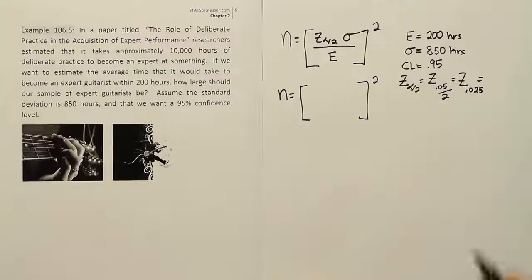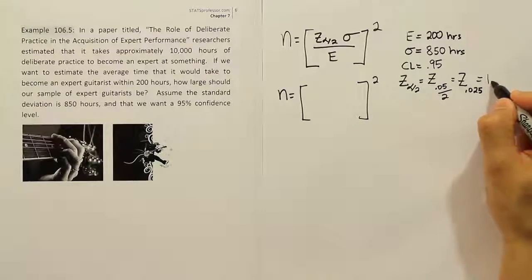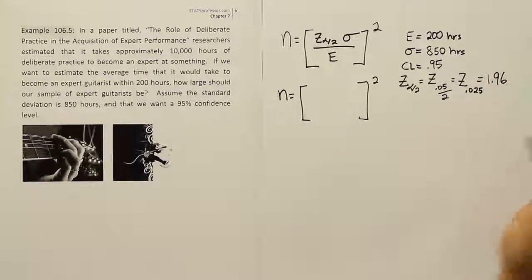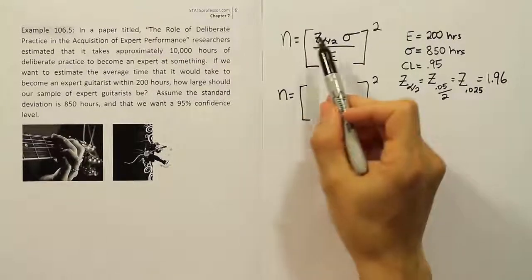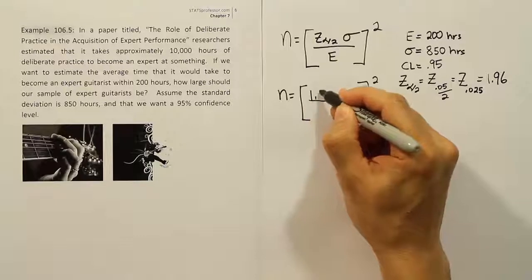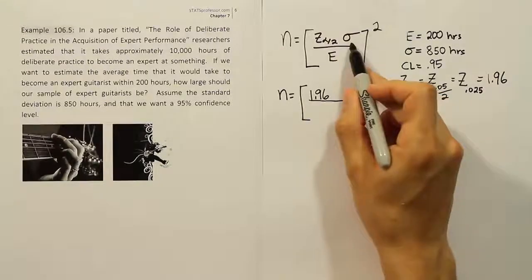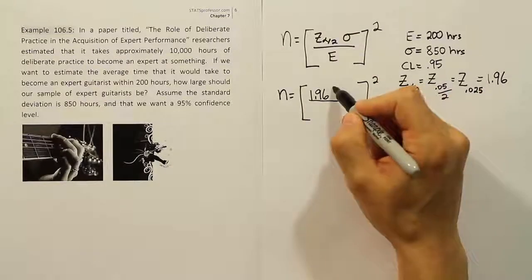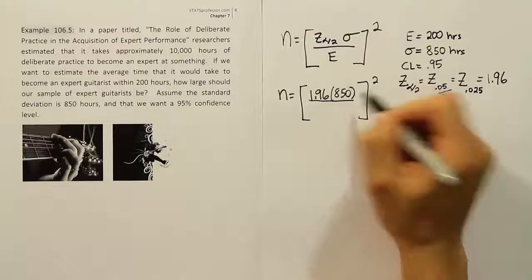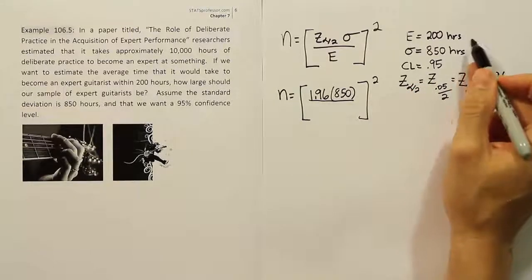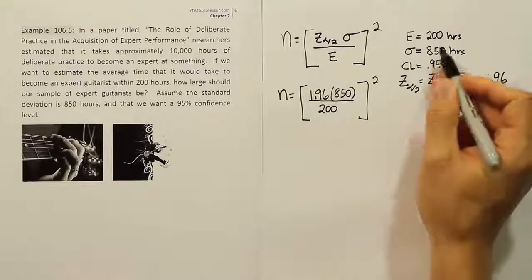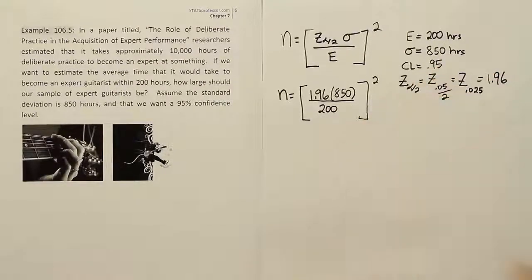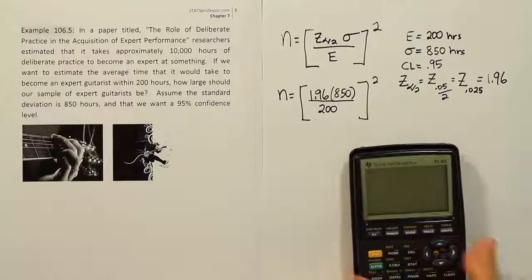Okay, so we found our critical z_{α/2} value to be 1.96. That's the number we'll use in our formula. So we'll have 1.96 times the standard deviation, which was 850 hours. We don't need to put the hours in because they'll cancel out with the margin of error at the bottom, which is 200. Then we'll put that all in our calculator.